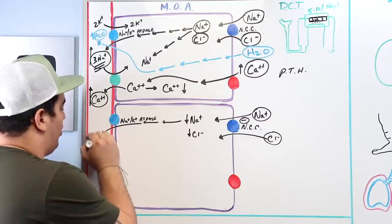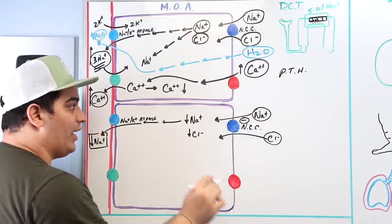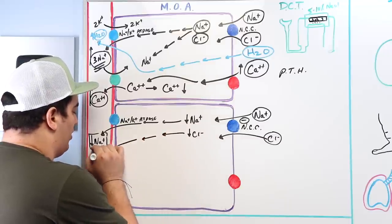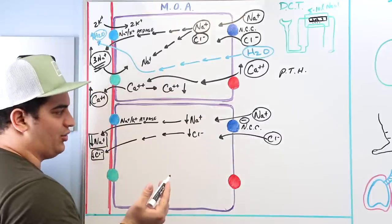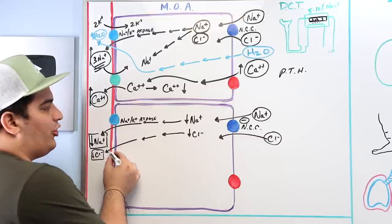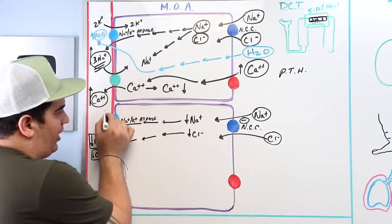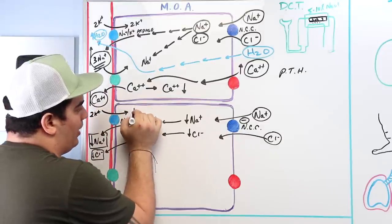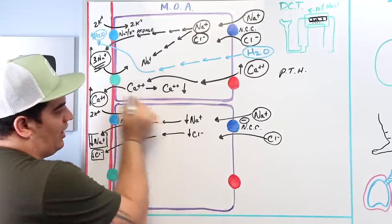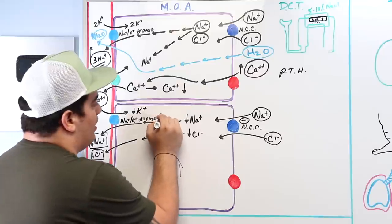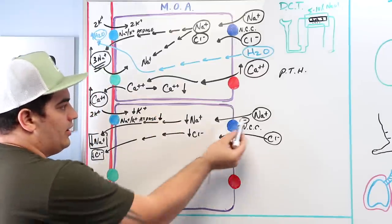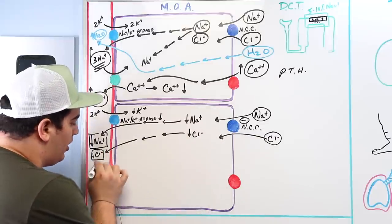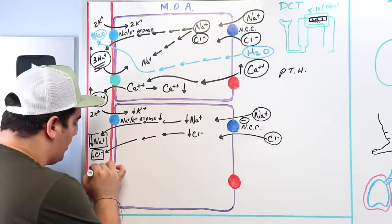Decreasing sodium is one of the primary goals of thiazide and thiazide-like diuretics. Chloride also has its own channel to exit the cell, so we decrease chloride concentration as well. And because the sodium-potassium ATPase is less active, it also pumps in less potassium — two potassium in per cycle — so less potassium enters the cell.